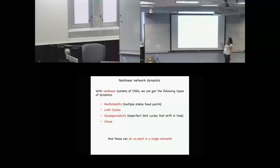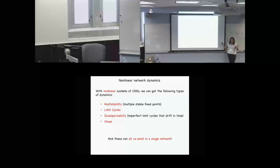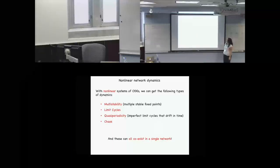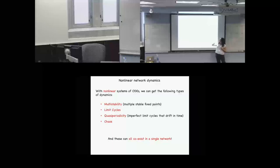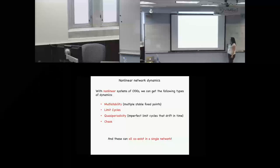We feel a need to move towards nonlinear network dynamics, assuming we're going to model this with differential equations. The question is how complicated a nonlinearity do we need to get those features. Can we get them with something that is simple and practically linear? That's where we turn to threshold linear networks. With nonlinear systems, we can get multi-stability — the coexistence of multiple stable fixed points — as well as limit cycles, quasi-periodicity, and chaotic behavior. Furthermore, all of those can coexist in a single network.